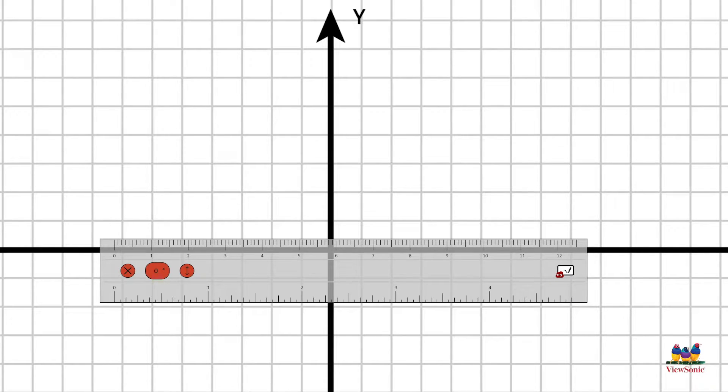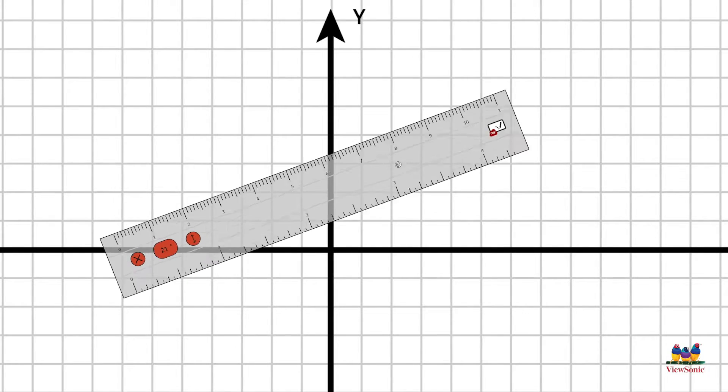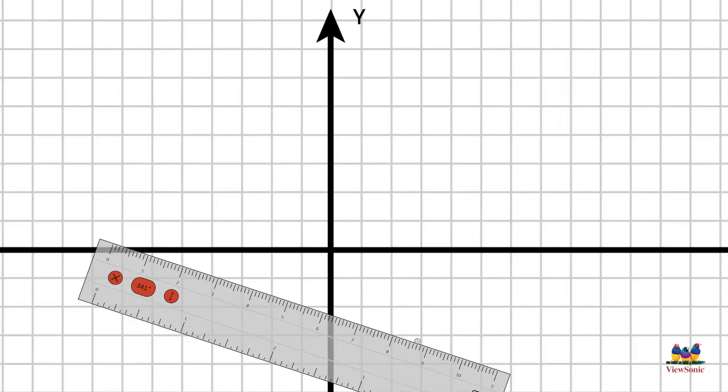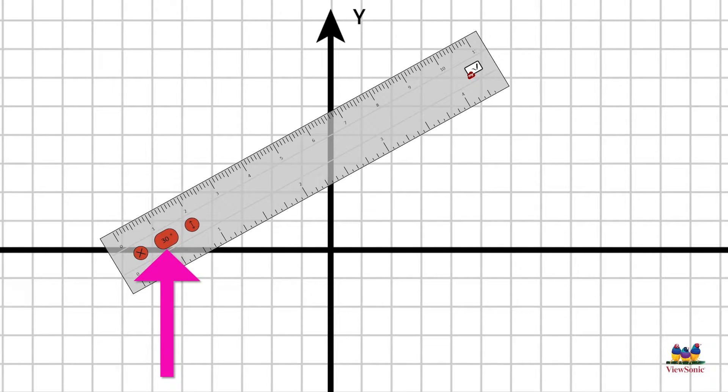If you want to rotate it, touch where it has inches or centimeters and then drag it up and down. You'll notice that as you drag, on the left there's a degree indicator which will show you the degrees that the ruler is at.